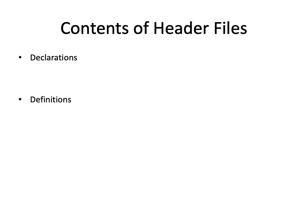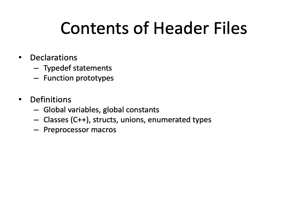What does a header file contain? Declarations include typedefs — a typedef definition is really a declaration of a type — and function prototypes, the function stubs. Definitions include things like global variables, global constants, C++ structs, unions, and enumerated types. Though usually variables will be in a .c file.